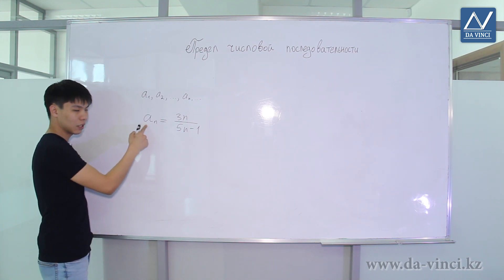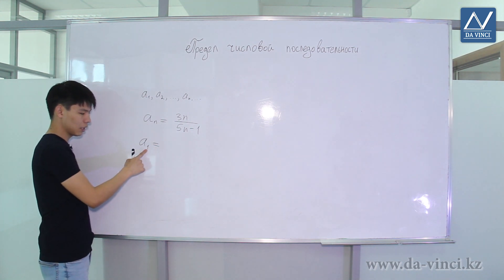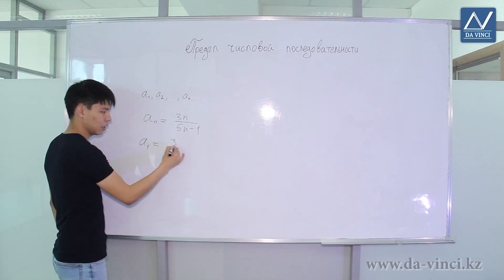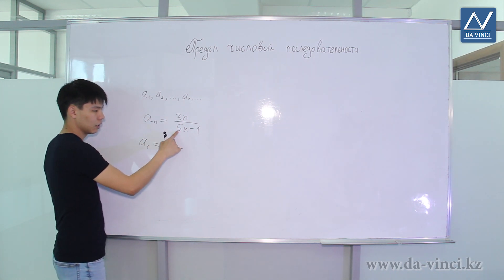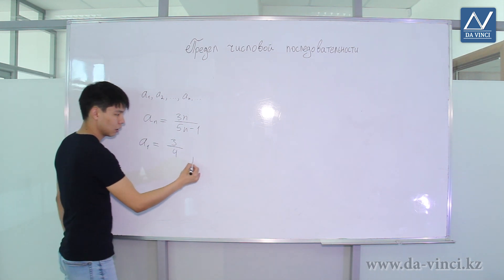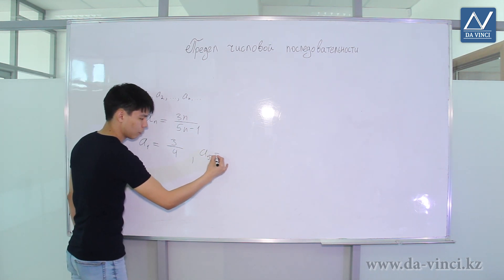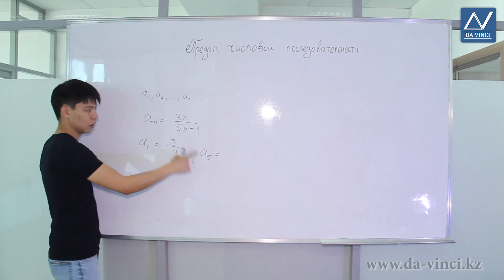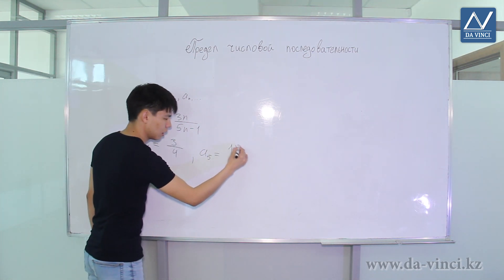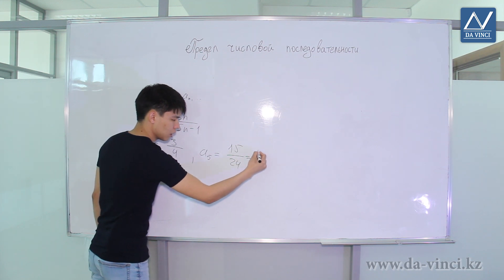For example, if we want to calculate a1, we put 1 instead of N. So it will be 3 multiplied by 1, which gives 3, and 5 multiplied by 1 minus 1, which gives 4. To calculate a5, we substitute 5 instead of N, giving 15 on top and 24 on the bottom.